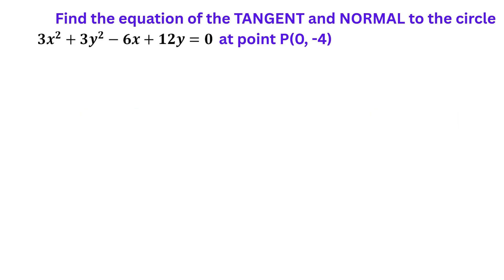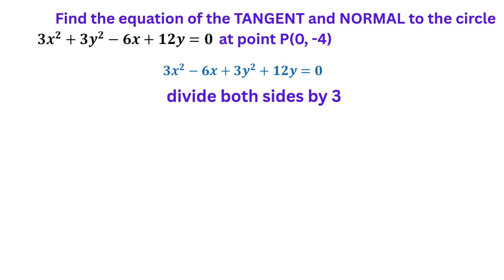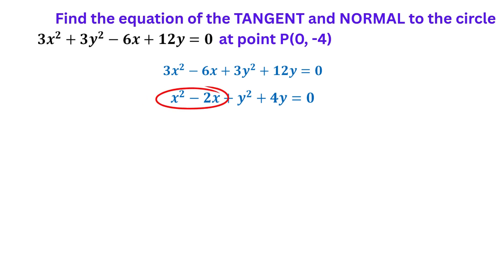To find the equation of the tangent to a circle, we need to know the coordinates of the centre. So let's rewrite the equation of the circle in its standard form. First, we need to group the terms in X. The coefficient of X squared and Y squared must be 1, so we divide all the terms on both sides of the equation by 3. Let's complete the square for the terms in X. Inside the brackets, put X, then half of the X coefficient, which is minus 1. Outside the brackets, subtract the square of the constant inside. The square of 1 is 1, so we subtract 1.